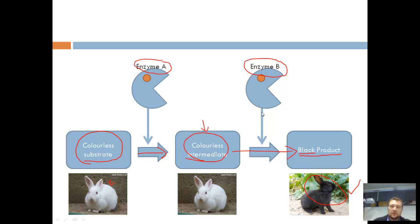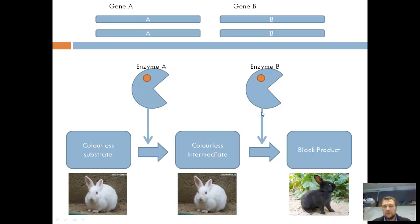I'm going to refer back to the central dogma of biology and genetics to explain how this relates to the phenotype of an organism. If you change the gene — if there's a change in the sequence of the gene — that will change the enzyme, and may render it non-functional or cause it to function in a different way. This means that the enzyme no longer makes one of the products in the chain, which has an impact on the phenotype of the organism.